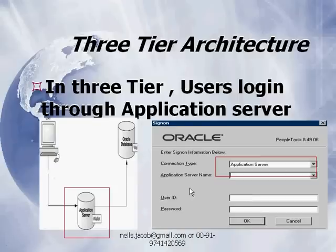The answer is very simple — see the connection type. If the connection type is set to application server, as shown on the right-hand side of the screen, then it becomes a three-tier architecture.